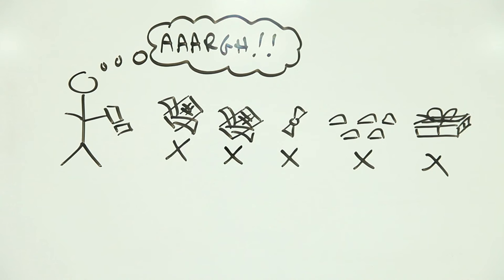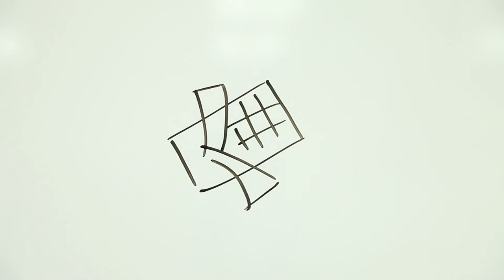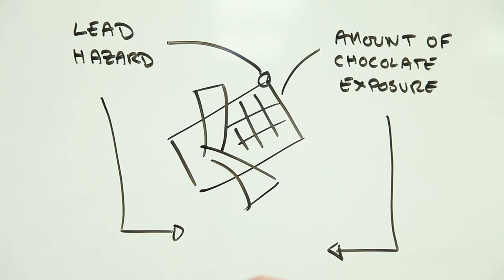You have just hit the measurement conundrum. The chocolate you've been eating hasn't changed. All that's changed is your ability to measure what is in it. Does this mean that what you assumed to be safe is now not safe? Not at all. Just because you can measure something doesn't necessarily mean that it presents a risk.